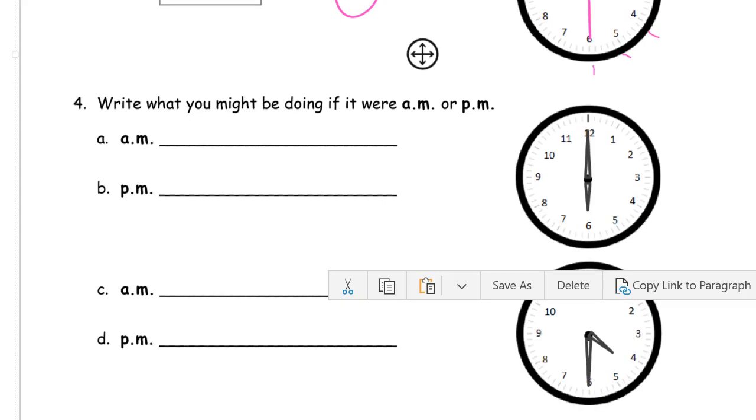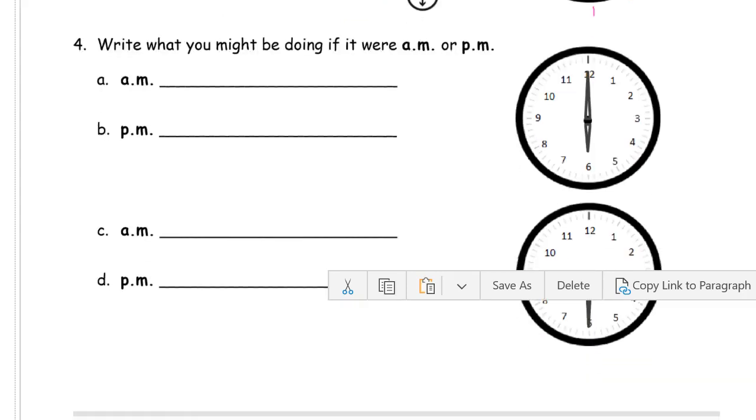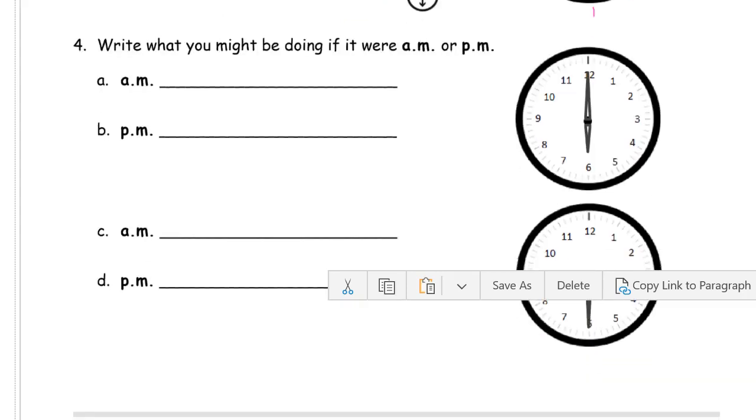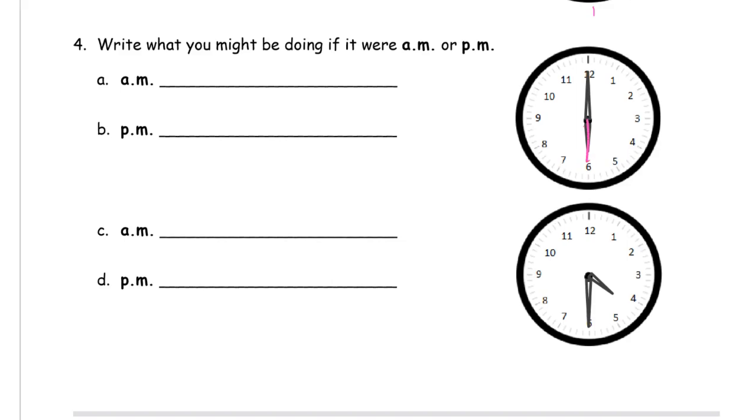Write what you might be doing if it were a.m. or p.m. So what time is this? Well, hour hand says 6. And the minutes are straight up 0, 0. So that's 6 o'clock. 6 in the morning. What might you be doing?